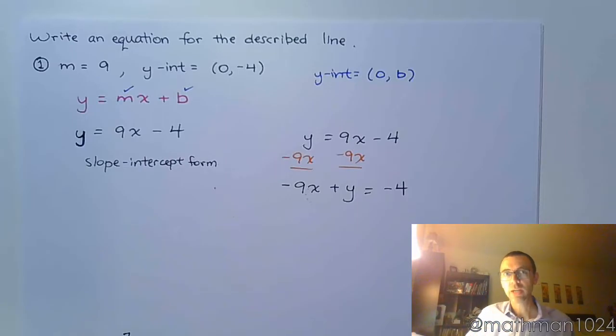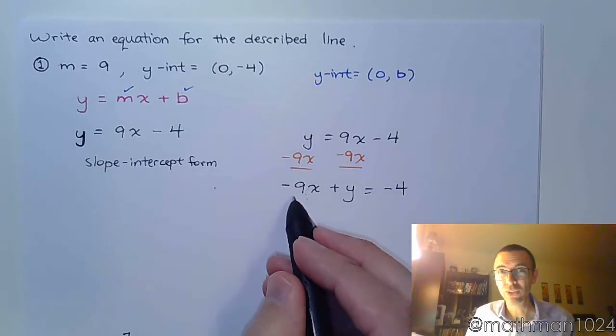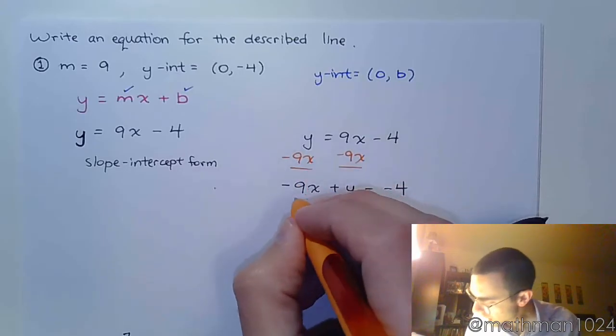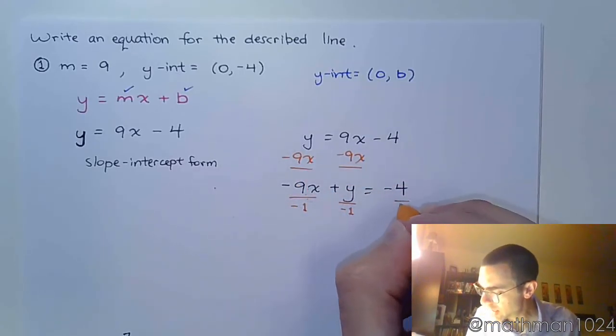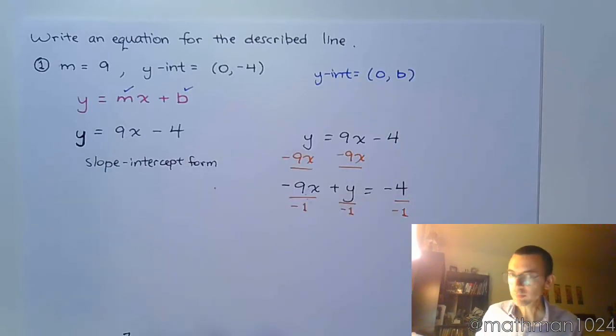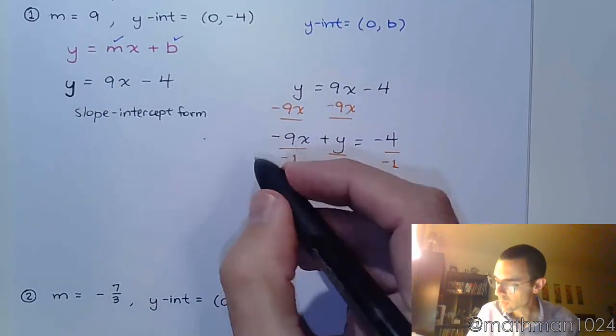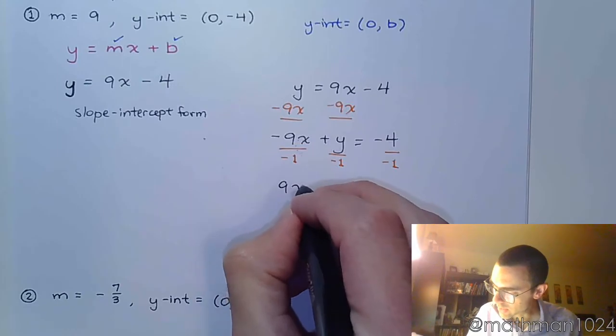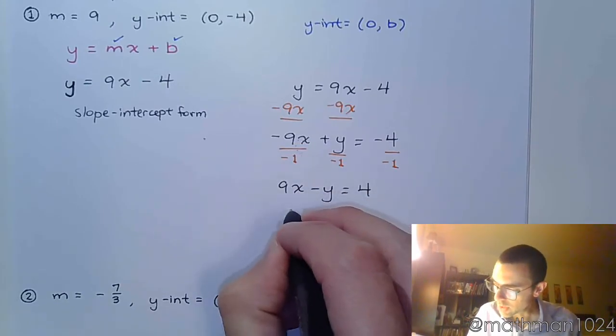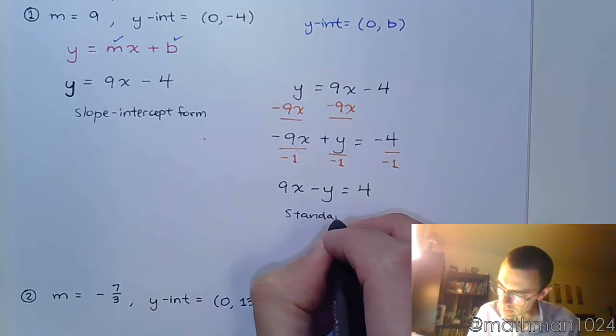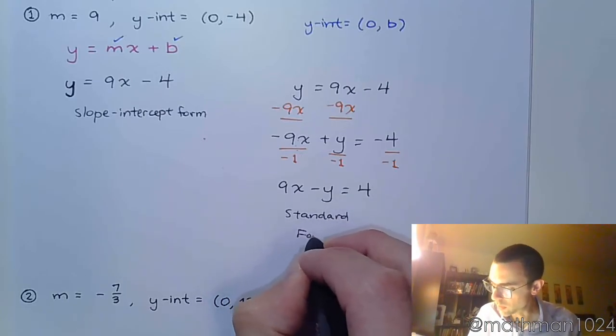One of the things we need to know about standard form is that x and y are on the same side. They also don't want to have any fractions, and they typically don't want you to have a leading negative coefficient, which means the negative here is really no good. So we fix that just by dividing everything by negative 1. So when we do that, we have 9x minus y equals positive 4. And so this would be your answer in standard form.